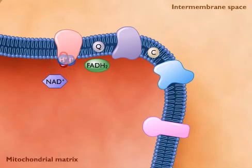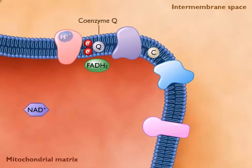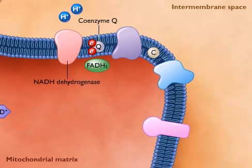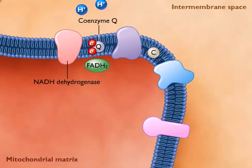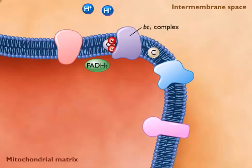The electrons from NADH are transferred to the electron carrier coenzyme Q by NADH dehydrogenase, and the protons are transferred across the membrane to the intermembrane space. Coenzyme Q carries the electrons to the cytochrome BC1 complex.